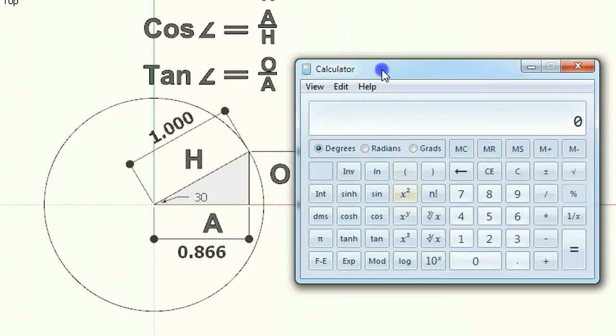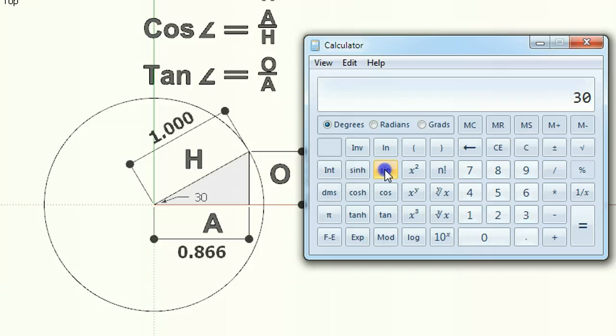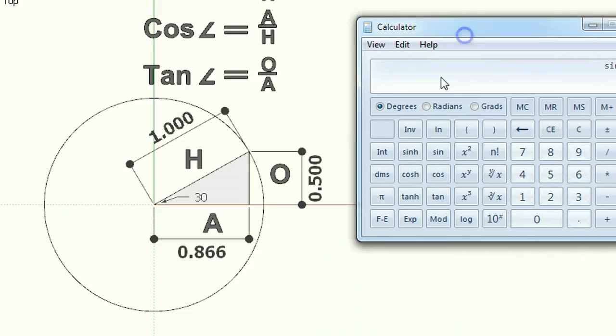We have a 30 degree angle. So I'm going to type in 30 into a calculator. And when I click the sine, I get this value here, 0.5. You'll notice that that is the length of the opposite, 0.5.